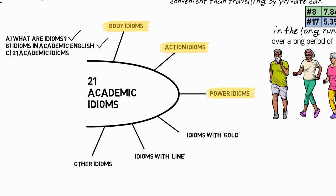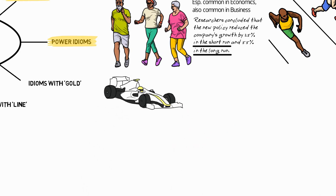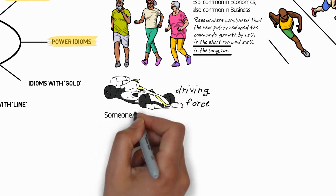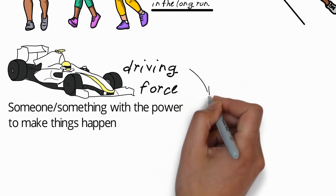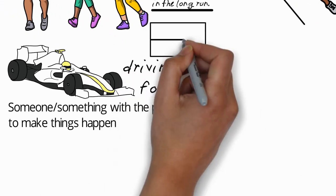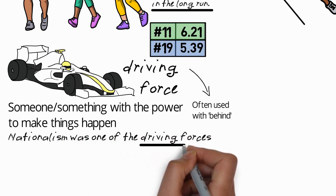Next, let's look at power idioms. So there are just two of these. The first is driving force, which means someone or something with the power to make things happen. This idiom is often used with the word behind. For example, nationalism was one of the driving forces behind World War One.